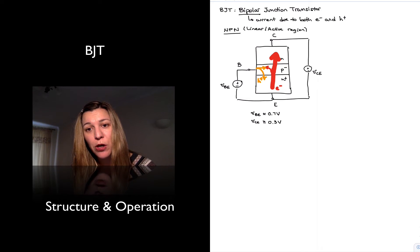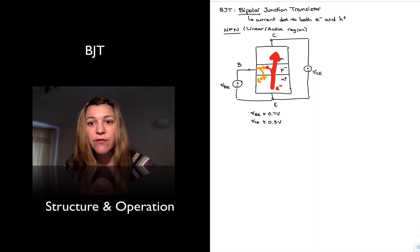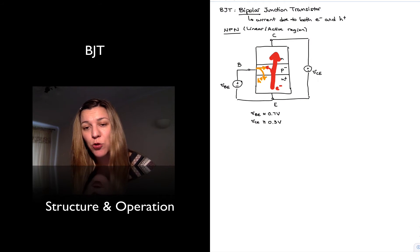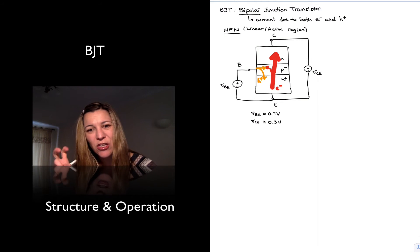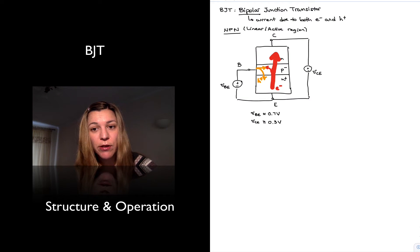Once in the base, a few of them recombine. Most of them get collected by the collector because there is a strong enough electric field, if the voltage is greater than 0.3 volts, to bring them into the collector. So we say they get collected by the collector. And so we have movement of charge through the NPN transistor, which means we have current flow.